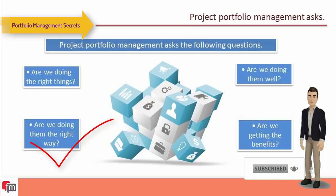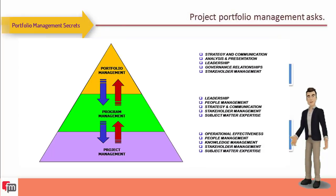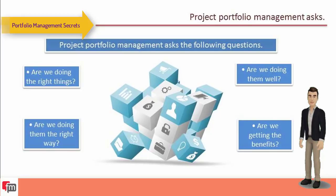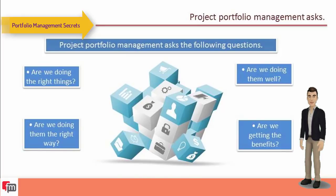Portfolio management asks: Are we doing the right things? Are we doing them the right way? Are we doing them well? Are we getting the benefits? A portfolio is a collection of projects, programs, subsidiary portfolios, and operations managed as a group to achieve strategic objectives — identified, assessed, evaluated, and authorized. Portfolio components may be related or unrelated, and a portfolio aims to achieve organizational and business unit strategies, consisting of current and future components like programs and projects.